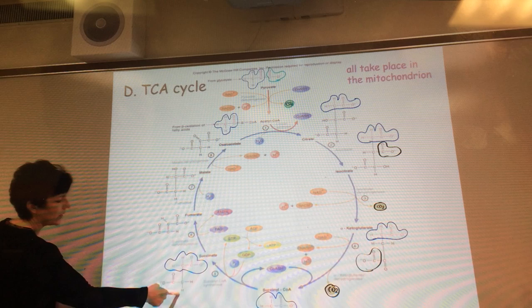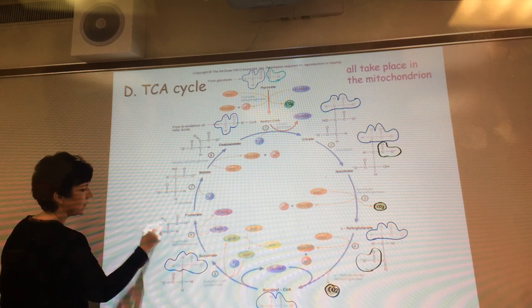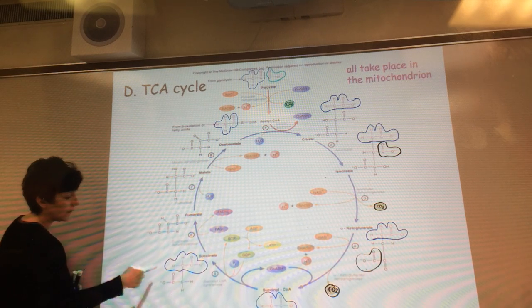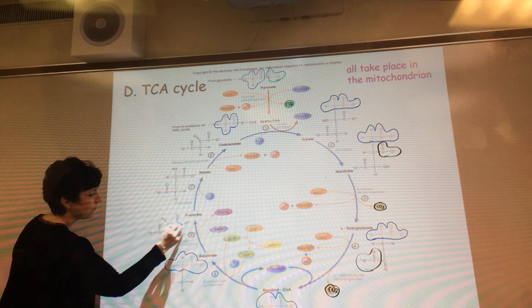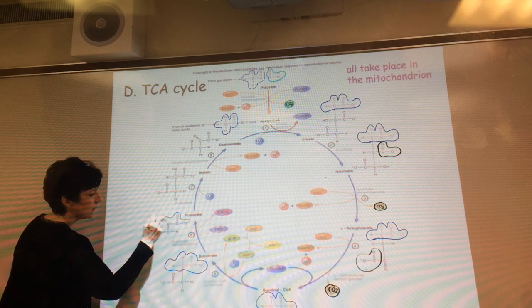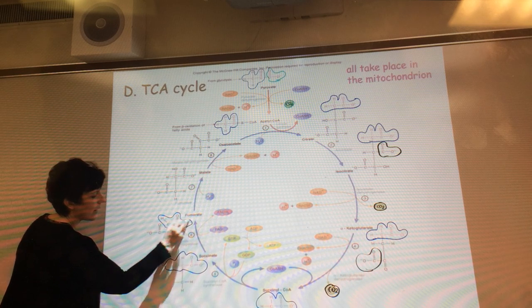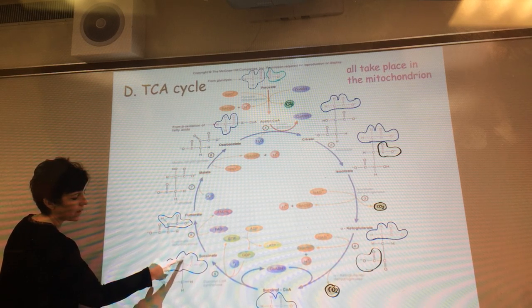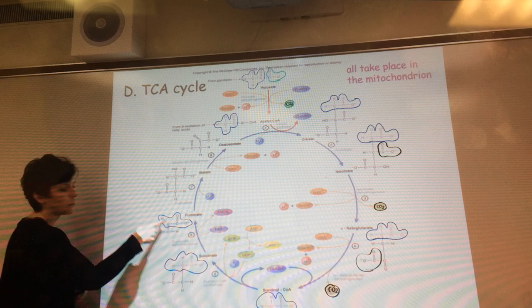We're going to play around with the double bonds, add some double bonds in here. So now when we go from our succinate to our fumarate, the carbon that used to have just the CH2 now becomes part of the double bond.